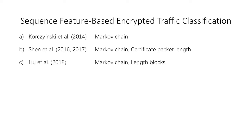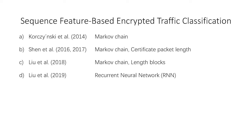Leo et al. tried to apply Markov chain models to packet length sequences and proposed multi-attribute Markov probability fingerprints to handle the large number of unique packet lengths. Leo et al. also proposed a deep learning-based approach named Flow Sequence Network (FSNet) to further improve classification accuracy. FSNet adopts a recurrent neural network to build an auto-encoder structure for packet length feature extraction and conducts application classification based on the feature vectors.